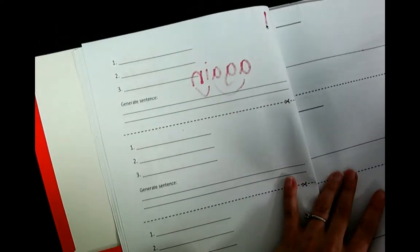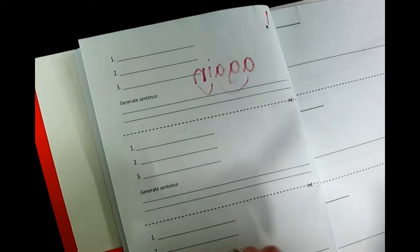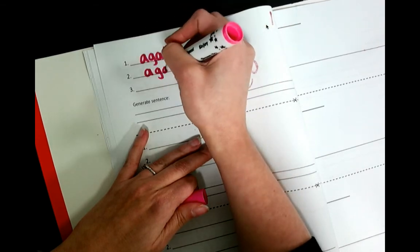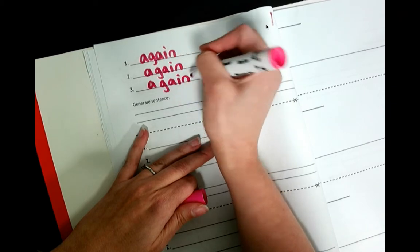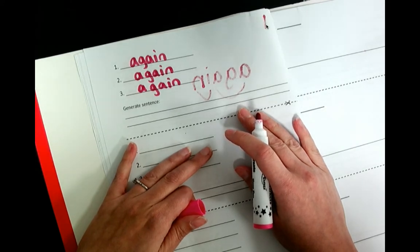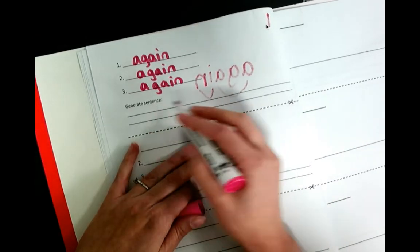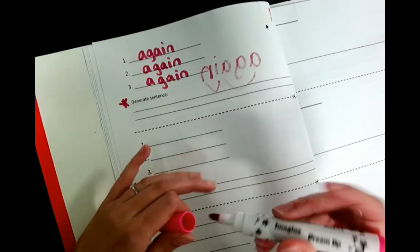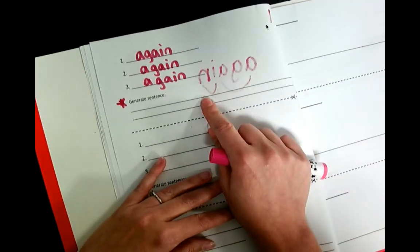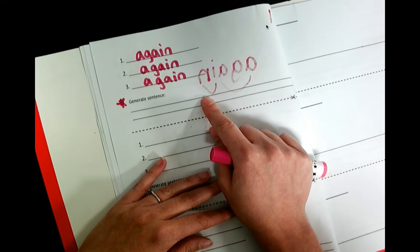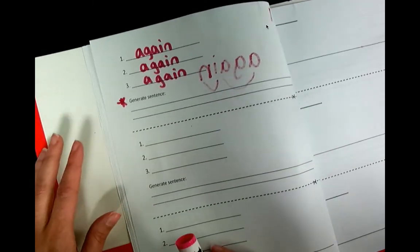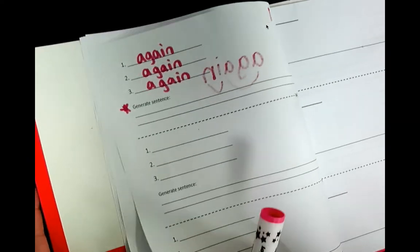Go ahead and write it three times on the back. A, G, A, I, N. Now, my sentence would be, can we please ride that ride again? What would your sentence be? Go ahead and write your sentence. You're going to share your sentence on a discussion board. Make it a good one. So, you're going to share three sentences today. You're going to share a sentence for again and the other two red words. So, make sure you write a good one. Write a good one.